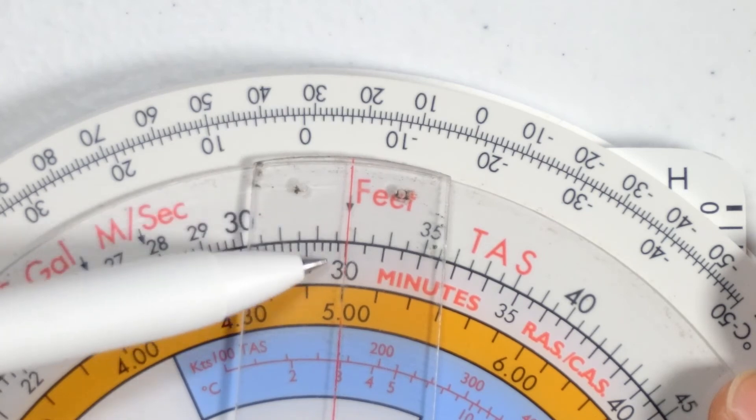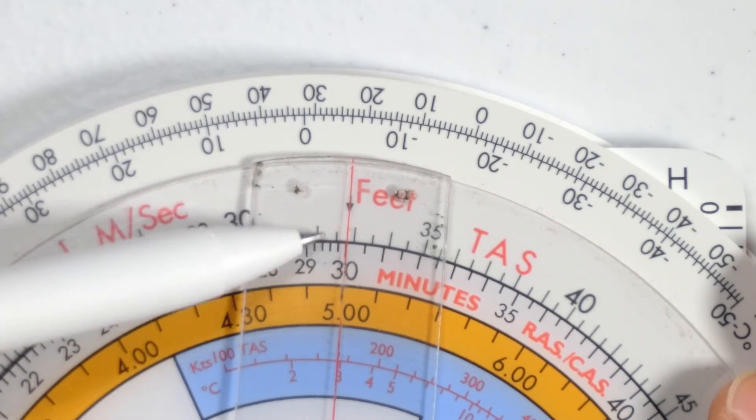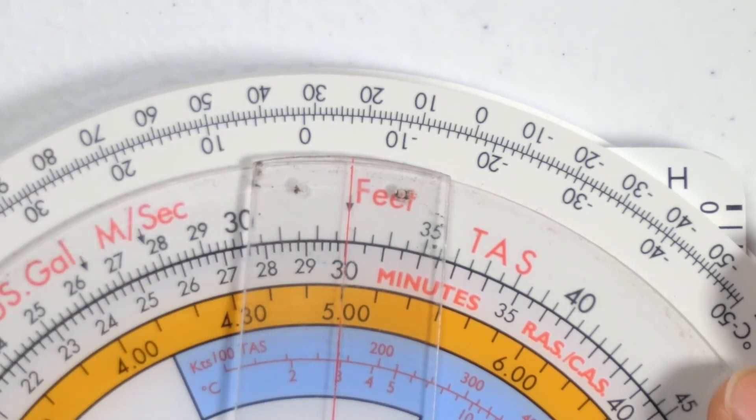We know what the rough conversion is. The conversion is roughly divided by 3. But we want an exact value. So what do we do? We look at the feet, sorry, we look at the meters scale.